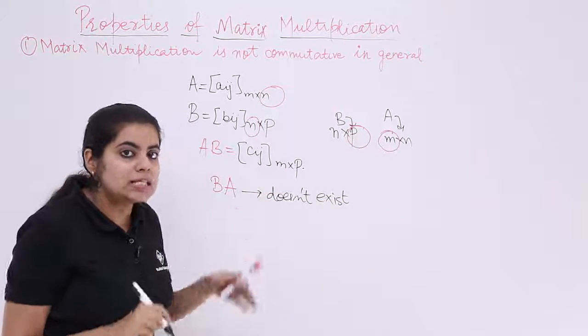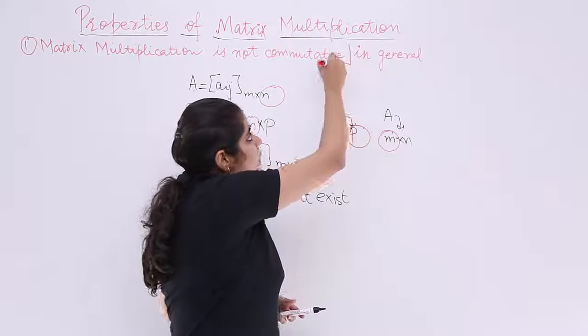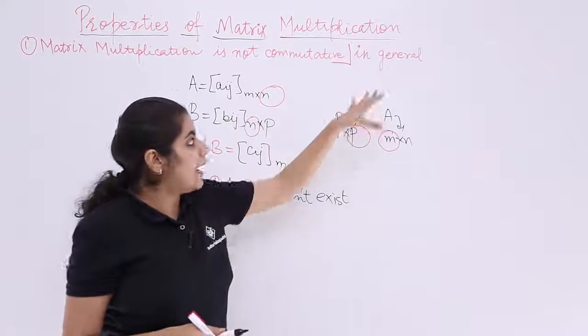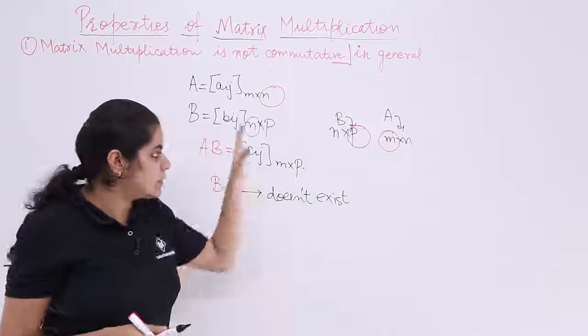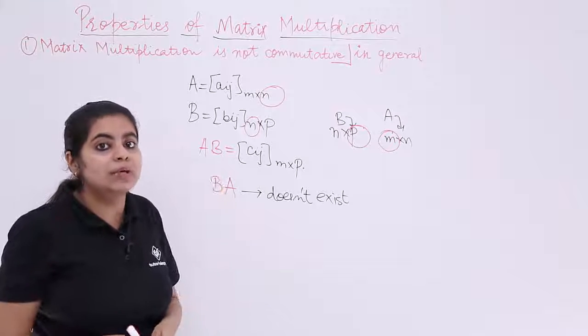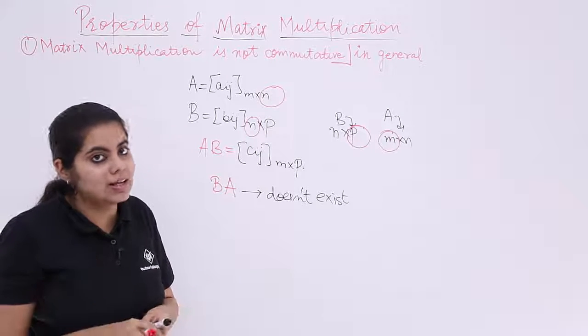But in certain cases why did the statement not stop here at not commutative? It stopped at in general because sometimes the case is like this where commutativity does not exist. But sometimes commutativity will exist. Well, let's see.